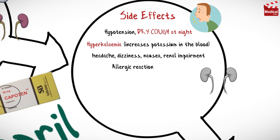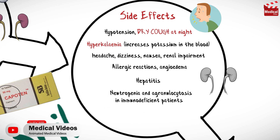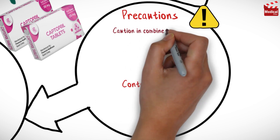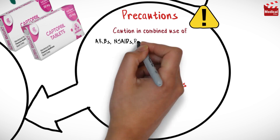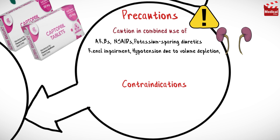Additional side effects include allergic reactions, angioedema, hepatitis, neutropenia, agranulocytosis in immunodeficient patients, and anemia in patients with chronic renal impairment. Caution is advised with combined use of angiotensin receptor blockers, non-steroidal anti-inflammatory drugs, and potassium-sparing diuretics.